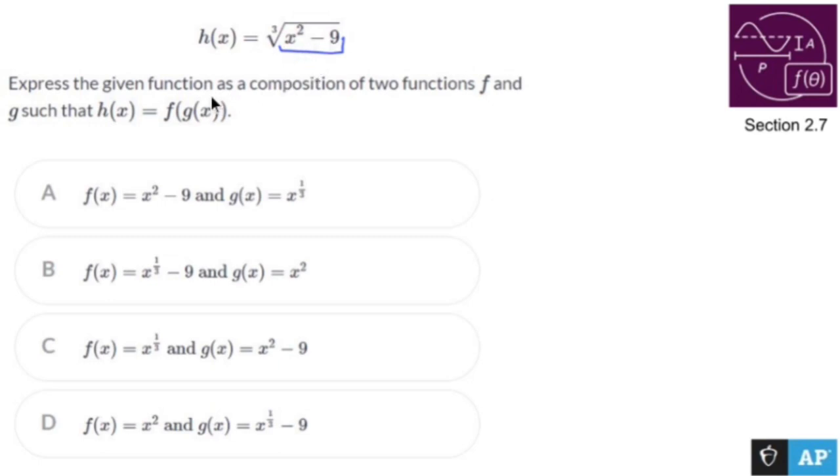g would be that guy living inside f, which would be that guy. So I view this as f is probably the square or the cubed root rather of stuff.